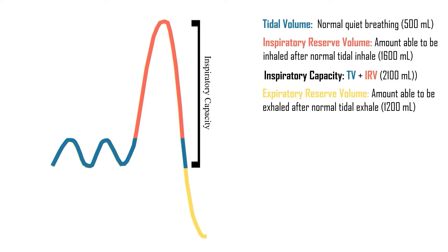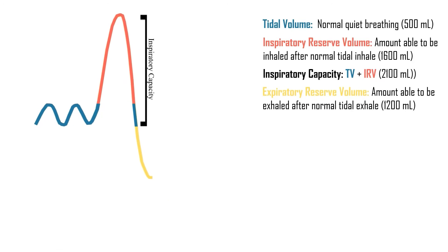However, even if you exhale as much as you possibly can, there's still going to be some air in your lungs because if there wasn't any air left in your lungs, your lungs would be collapsed. And that air that's remaining in the lungs is known as the residual volume.